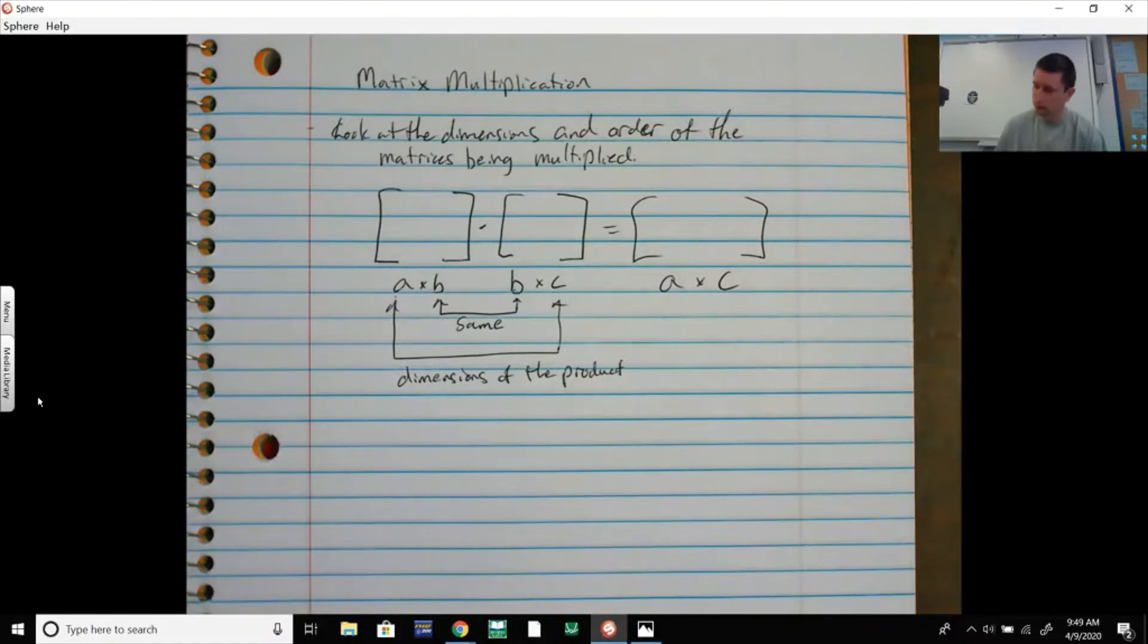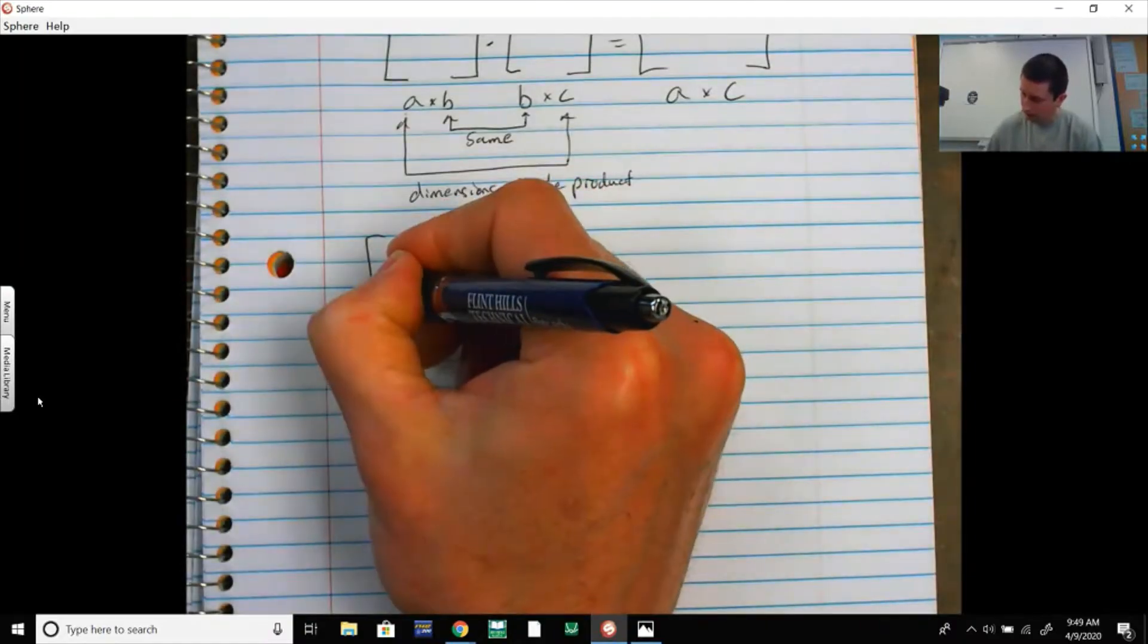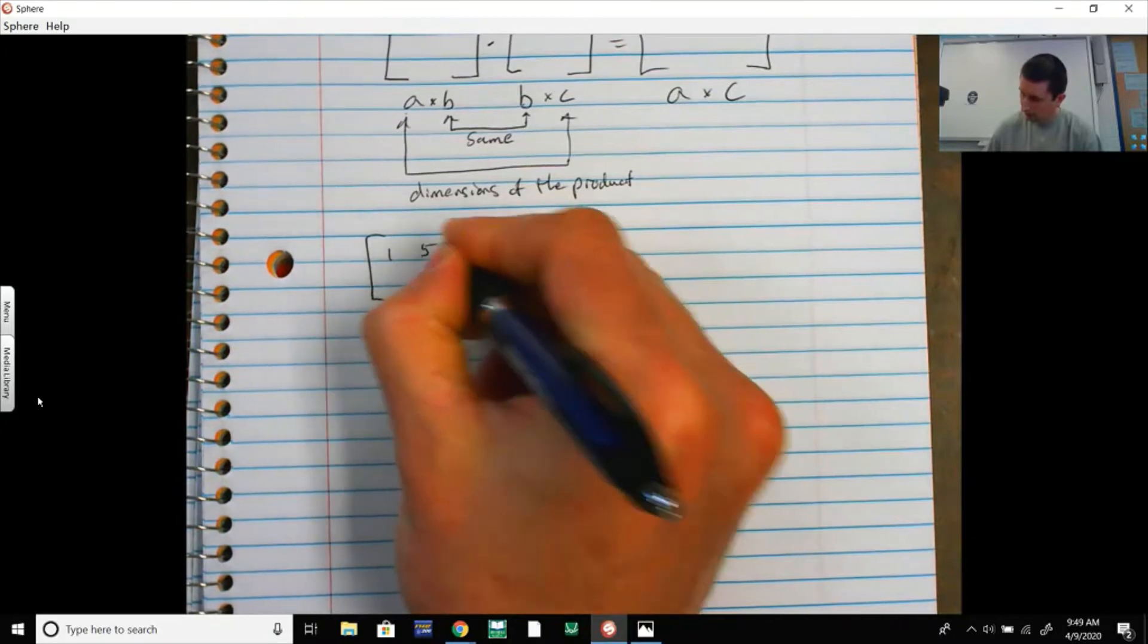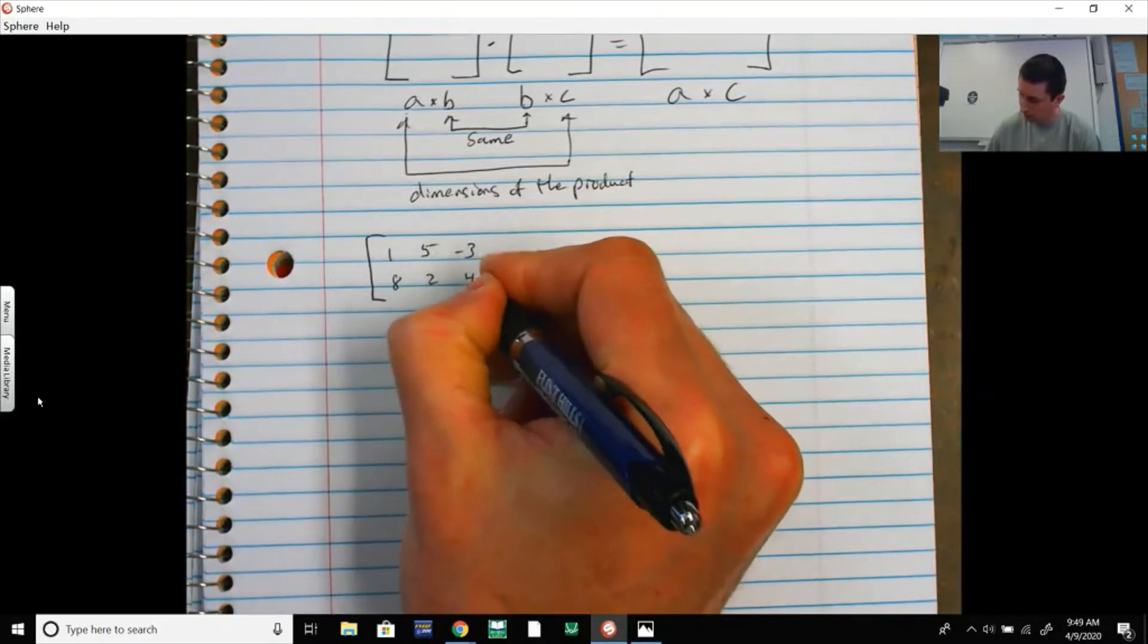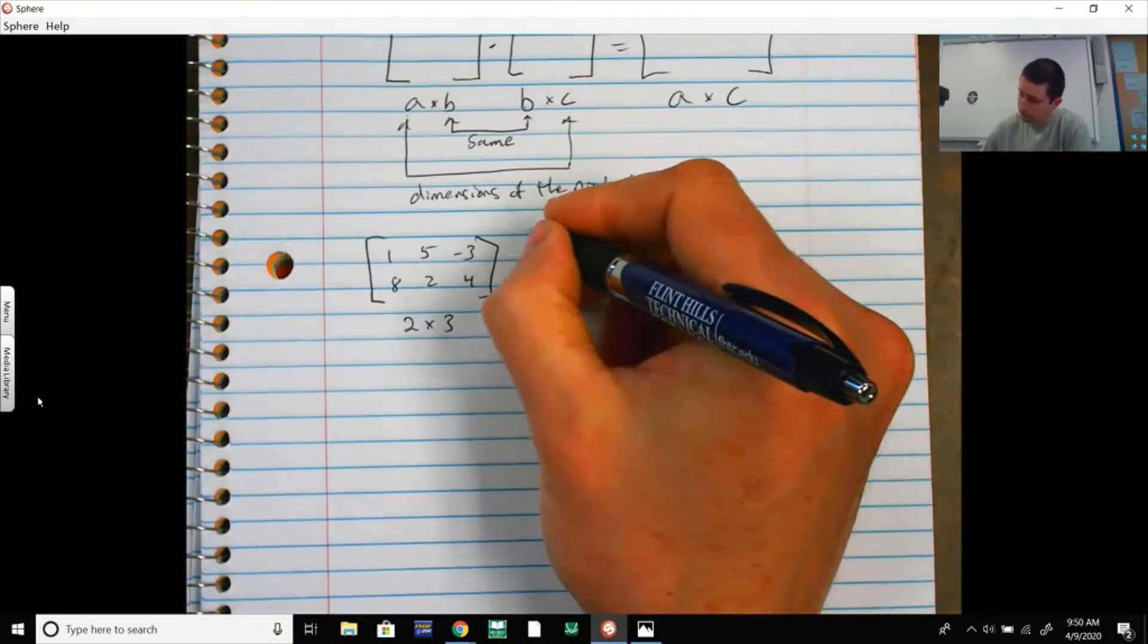Let's say we have 1, 5, -3, 8, 2, 4. That's a 2 by 3 matrix.